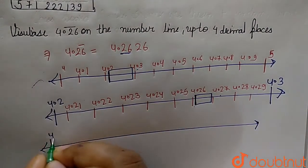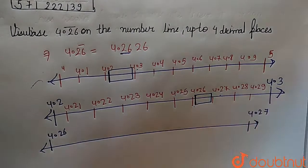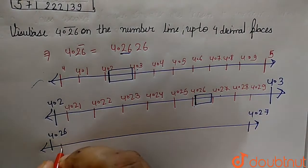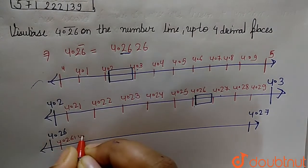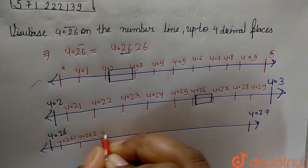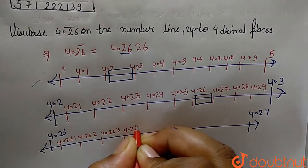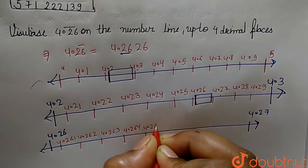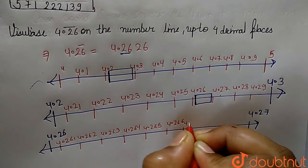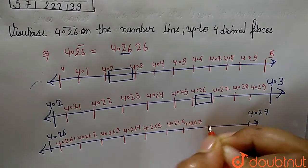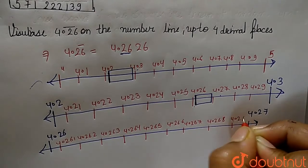On the number line from 4.26 to 4.27, we will have: 4.261, 4.262, 4.263, 4.264, 4.265, 4.266, 4.267, 4.268, and 4.269.